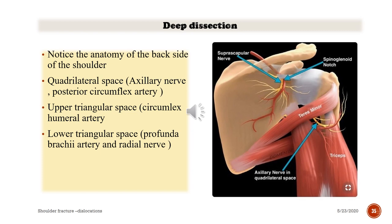Notice the anatomy of the posterior shoulder: quadrilateral space with axillary nerve and posterior circumflex artery; upper triangular space with circumflex humeral artery; lower triangular space with profunda brachial artery and radial nerve. The key point: do not go too far medially and do not go below the teres minor.